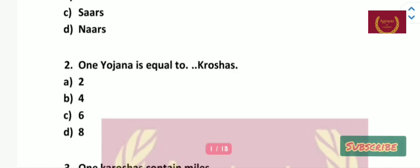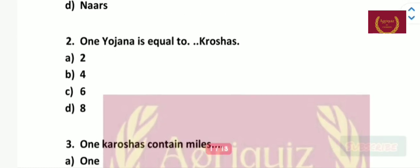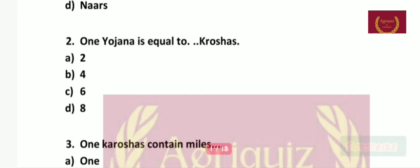Question number 2: One Yojna is equal to how many Crooshes — 2, 4, 6, or 8? The correct answer is 4.